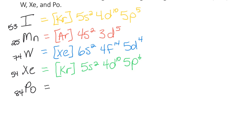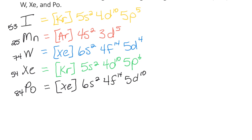Last is polonium (84) — it's in the sixth row, so the end of the fifth row is xenon. Starting at xenon: [Xe] 6S2 (to barium), 4F14 (to ytterbium), 5D10 (to mercury), and then polonium is at 6P4. Hopefully you guys understood all of this. If you can do this study guide, you should do well on the test. Good luck!